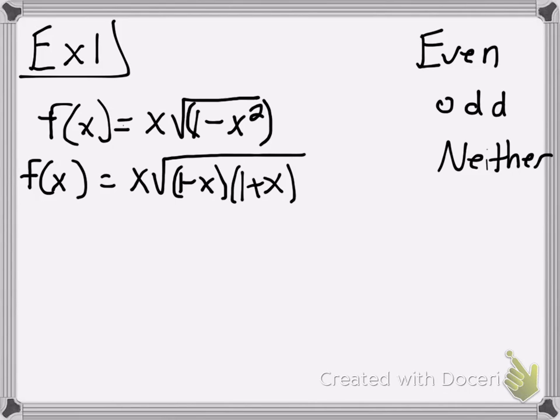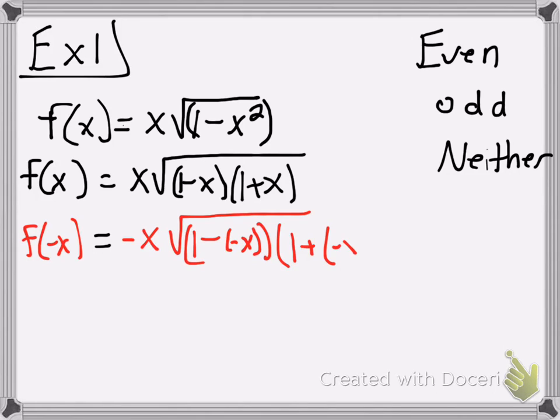And the next thing is try replacing x with negative x into every x in the equation. Now what happens is I went ahead and plugged negative x here in, and then 1 plus negative x here. So there's all that. Now that sign changes. So I know it's not even. So the age-old question, even, odd, or neither. I know it's not even because one thing changed. Now it's just deciding is it odd or is it neither? And this is where the gray area comes into play.